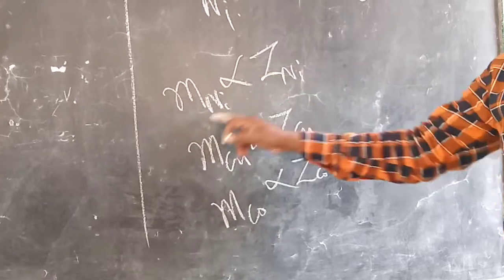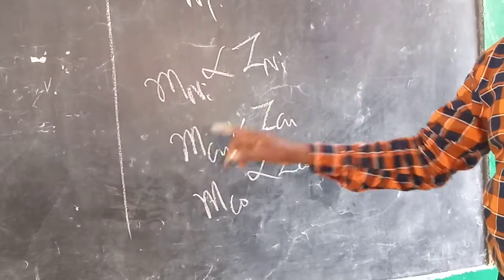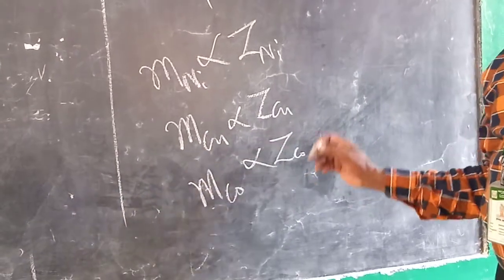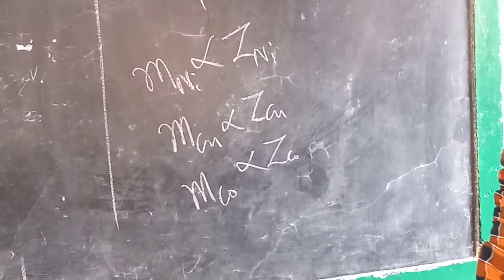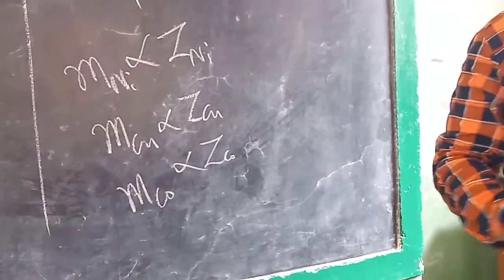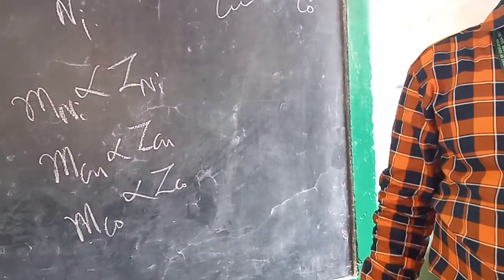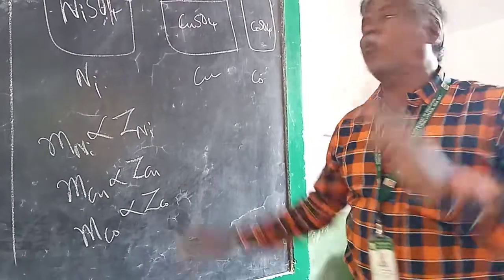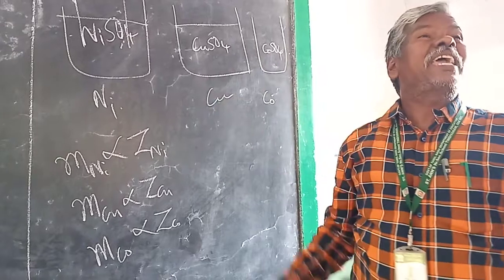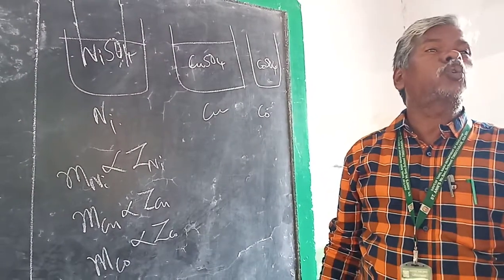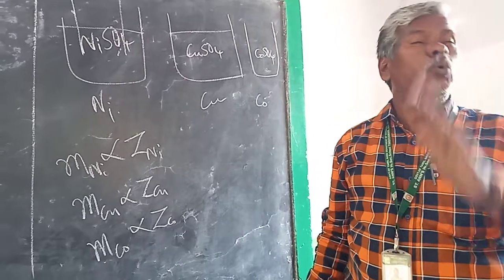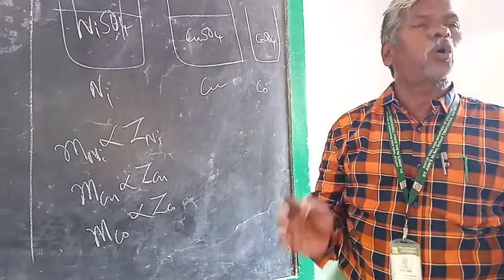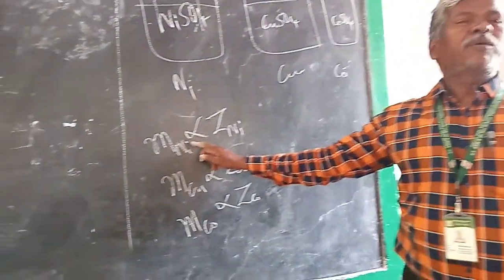M divided by Z is equal to M_Cu divided by Z_Cu. So when the same quantity of current is passed through different electrolytic solutions, the amount of the substance deposited is proportional to its chemical equivalent.